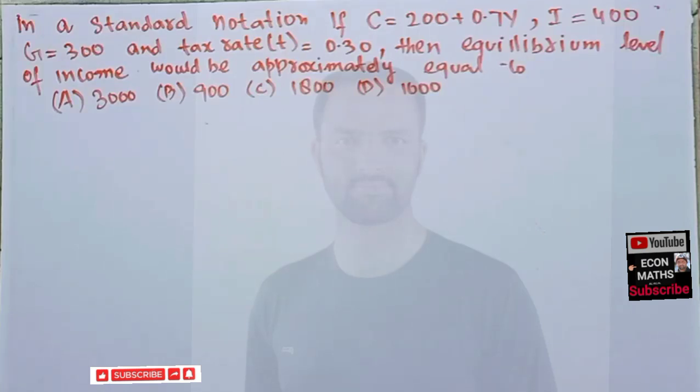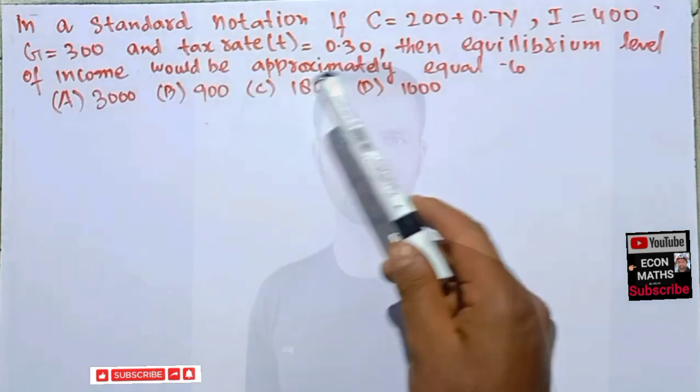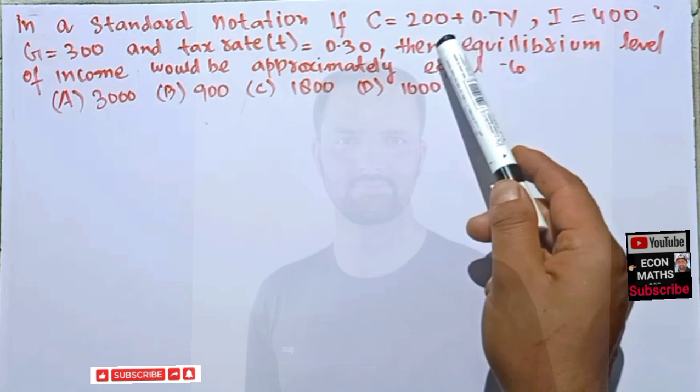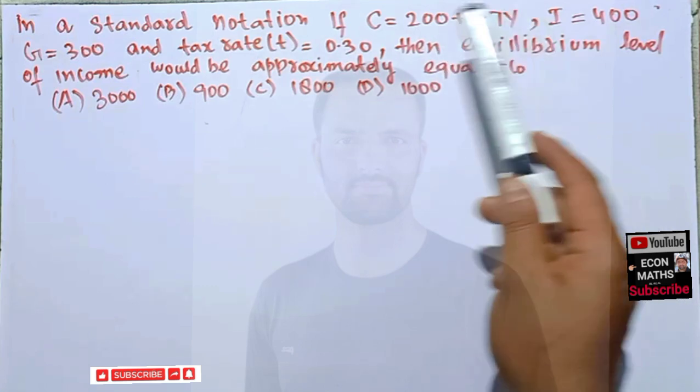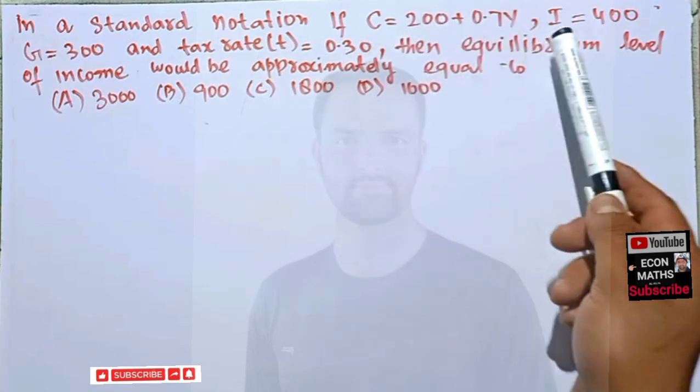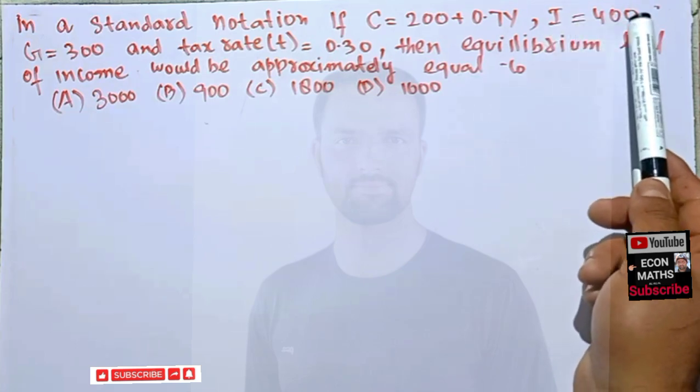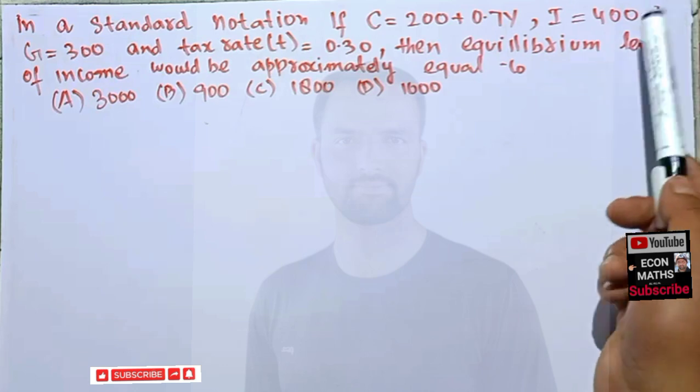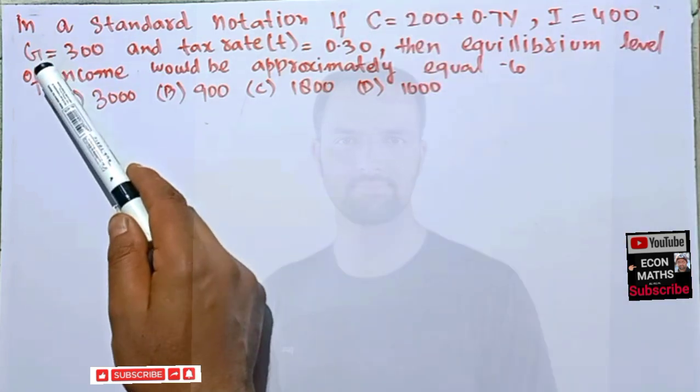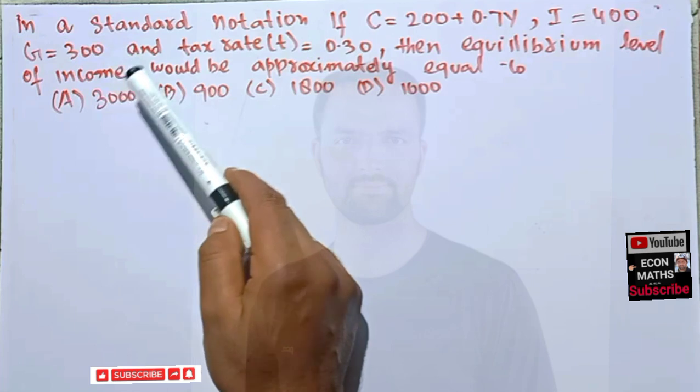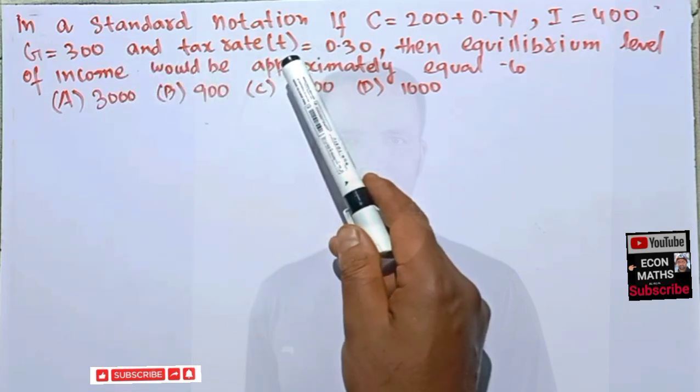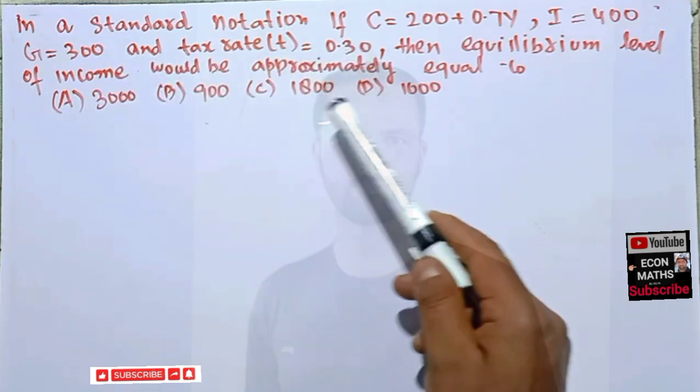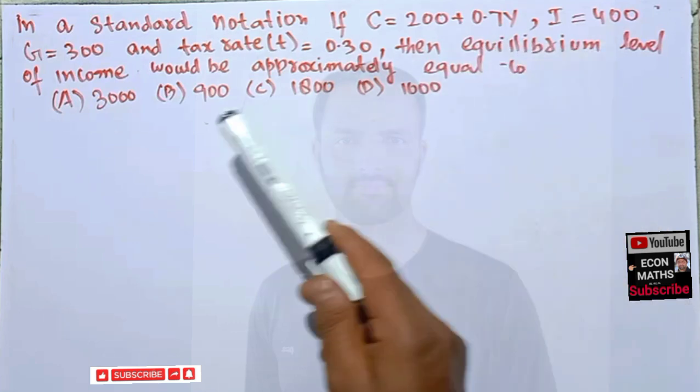In this video we will try to solve a problem on national income identity. The question is: in a standard notation if C equals 200 plus 0.7Y, where C is the consumption and Y is the income, our investment is autonomous which is 400 which does not depend upon the level of interest rate, our government expenditure is also autonomous which is 300.